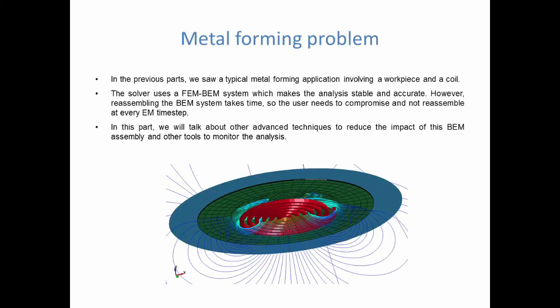In the previous parts we saw that the EM solver uses a so-called FEM-BEM method in order to solve electromagnetic metal forming applications. One key point we insisted upon is that the recomputation of the BEM matrices takes significant time — it has a high computational cost. So the user needs to compromise between accuracy and efficiency, but there are ways to improve speed without sacrificing too much accuracy.